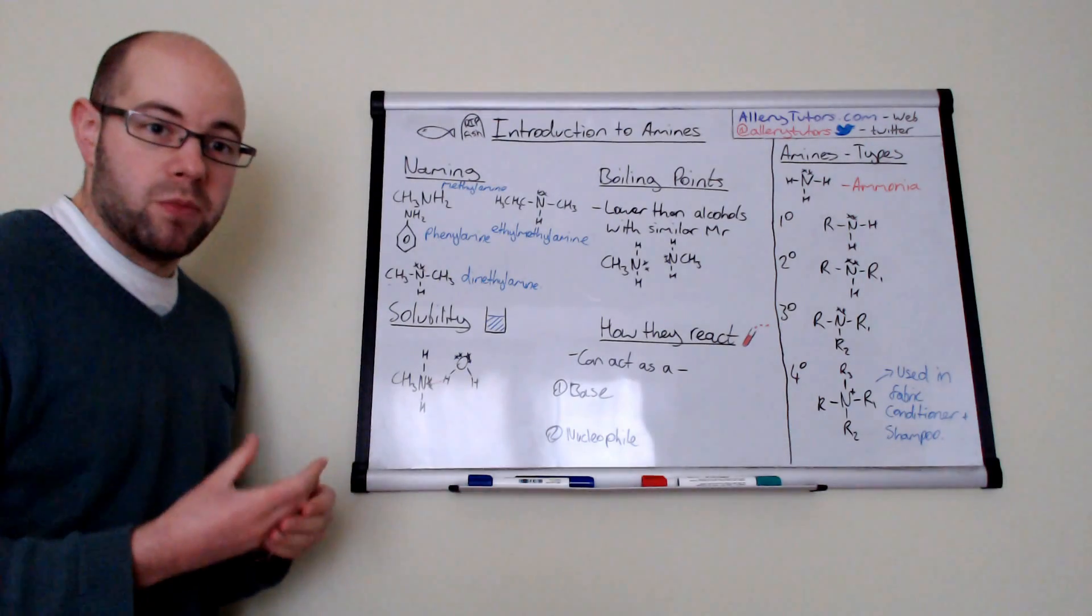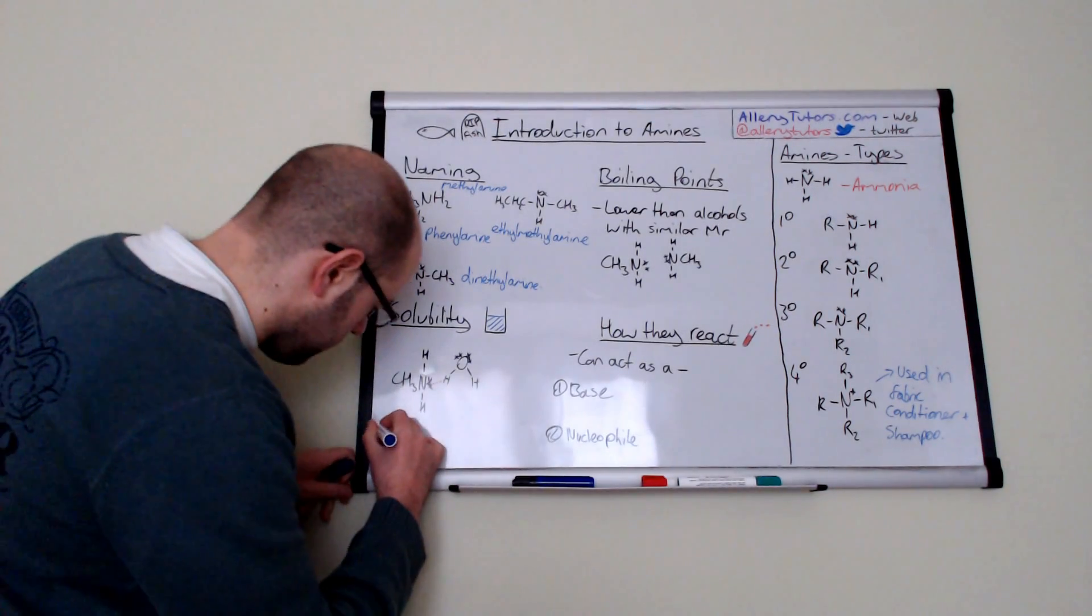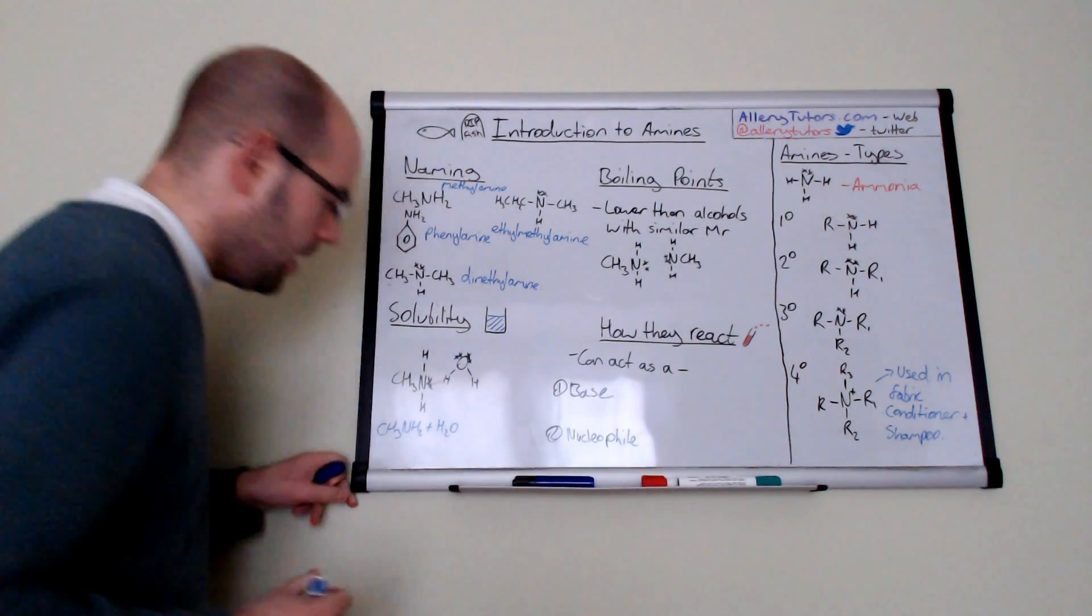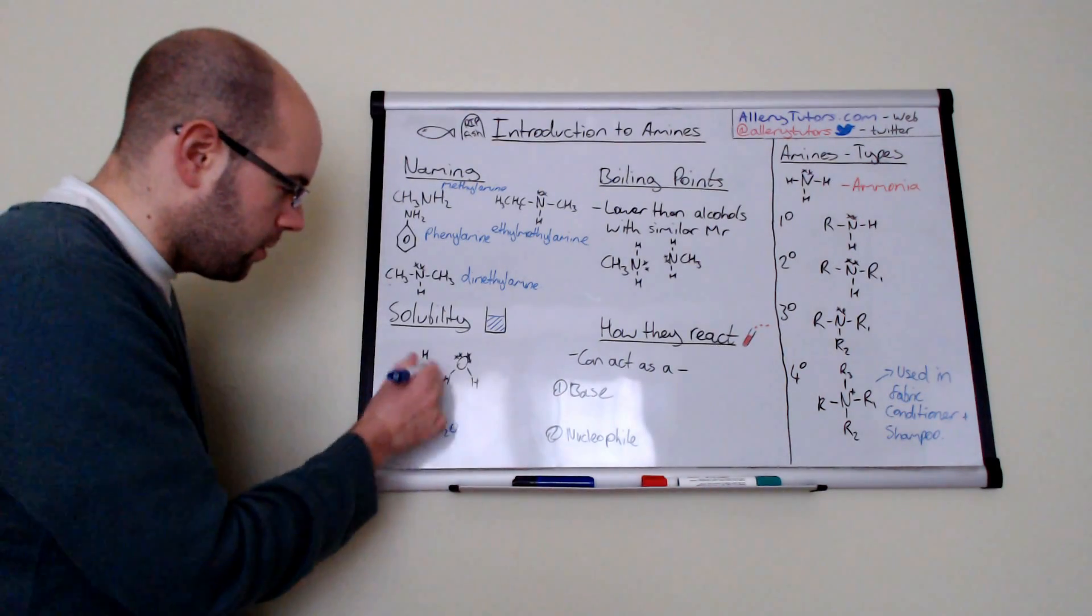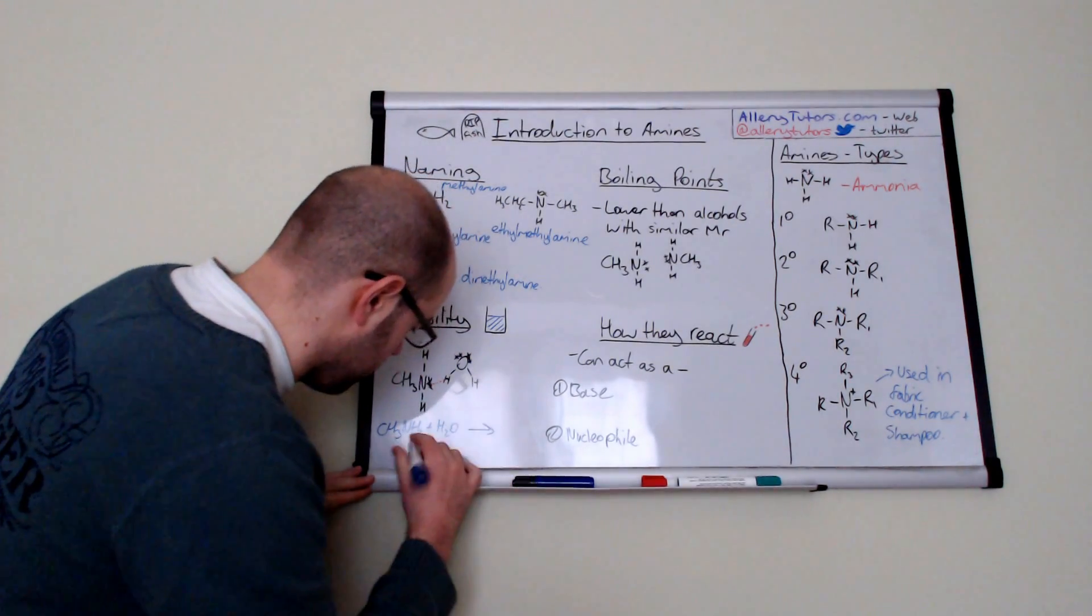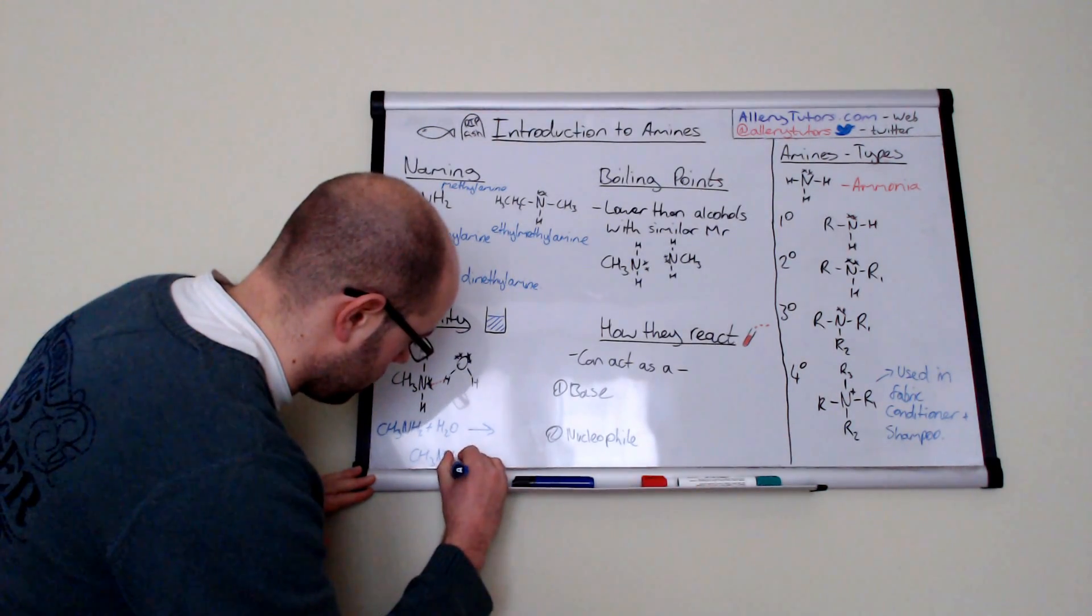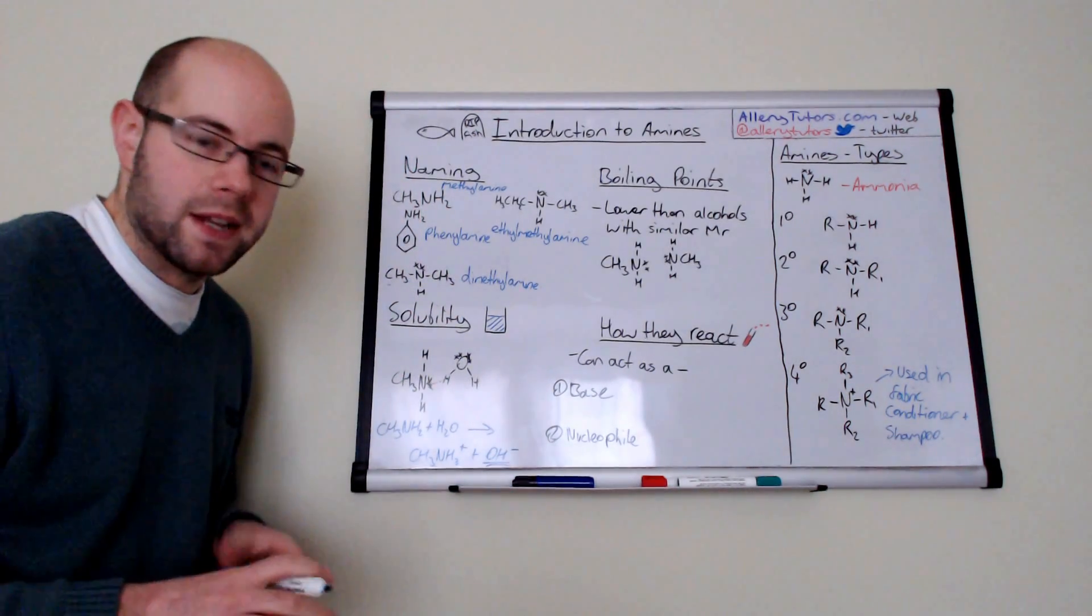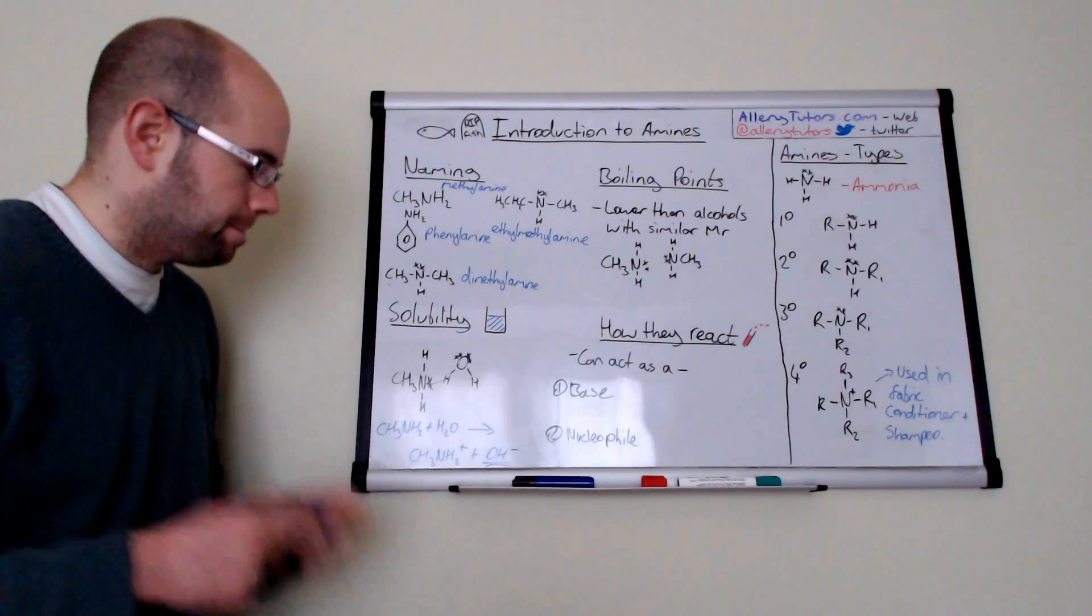Now amines when they dissolve in water they actually behave as a base. So if we do CH3NH2 and we react that with water which is H2O. Now according to Bronsted-Lowry theory bases are proton acceptors. So this amine can accept a proton from the water. So this is going to form CH3NH3+ plus OH-. And the fact that you've made OH- obviously makes this basic. So it uses the water to produce OH- which obviously makes your solution basic.